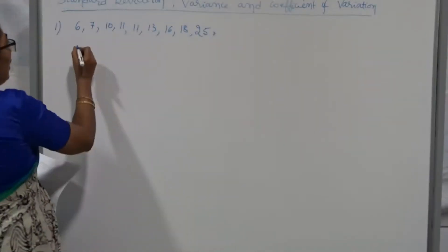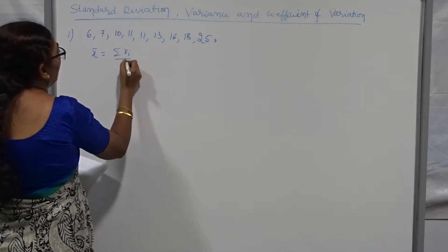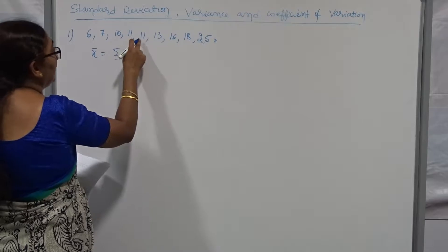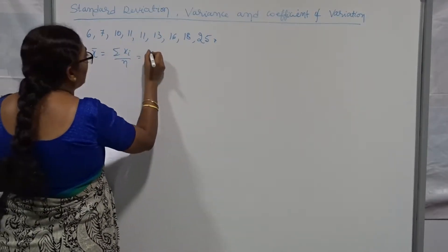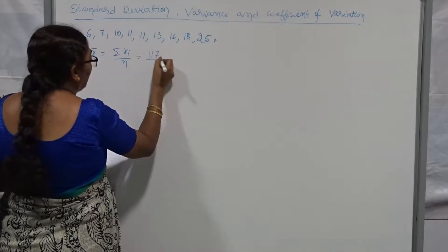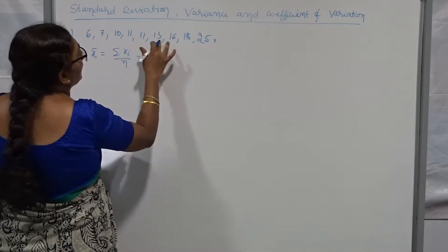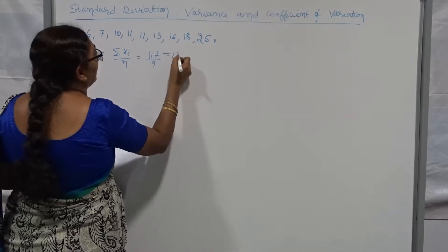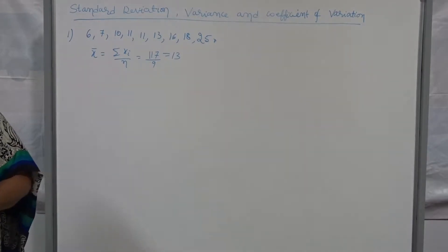Is there any small data only having the values of the variables? How to find out the mean? X-bar equals sum of the values divided by number of values. Take the sum: 6 plus 7 plus 10 plus 11 and so on. That sum is 117, divided by the number of values — we have 9 values — that gives us 13. Yes, 13 is a whole number.